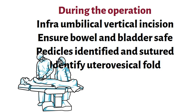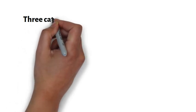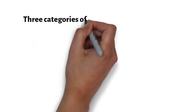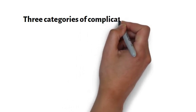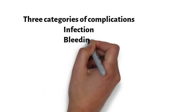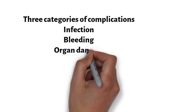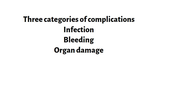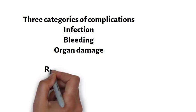Remember the three categories of complications for any operation. The first and most important is infection, which can be prevented by following infection control principles by the team members, the administration, and the operating room team. The second complication is bleeding, which can be avoided by carefully identifying structures, dissection, and ligation. The third complication is organ damage, which can be prevented by keeping pelvic structures out of the way with swabs, packs, and instruments.